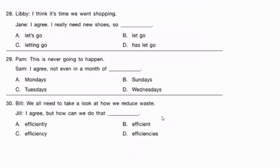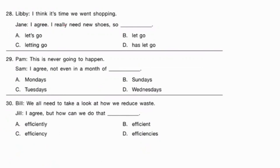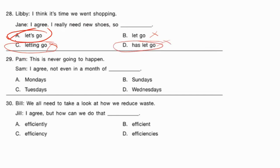'Libby, I think it's time we went shopping.' 'Jane: I agree, I really need new shoes, so ___.' Jane is agreeing and ready to go. 'Let's go' — this is the correct expression. 'Let go' is not the correct idiomatic form. 'Letting go' refers to a continuous action. 'Has let go' is grammatically wrong here. The correct answer is let's go.